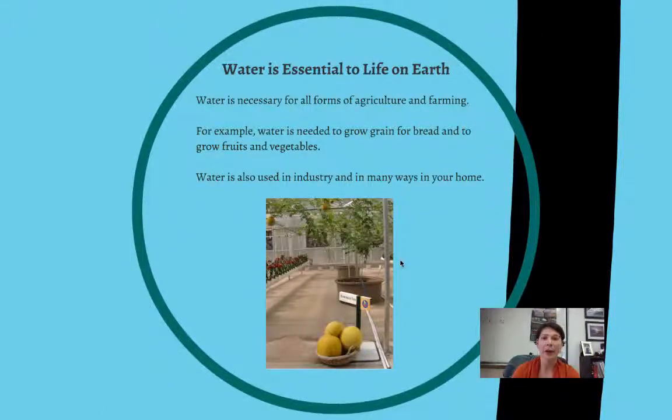So water is essential to life on Earth not only because you need it inside your body, but also you need it in order to grow the things that you need to keep your body working. So you need water to grow food. So water is necessary for all forms of agriculture and farming. Water is needed to grow grain for bread and to grow fruits and vegetables. And it's also used in many different types of industries and businesses and also in many ways in your home.